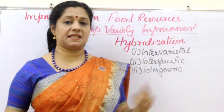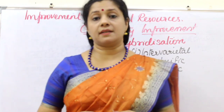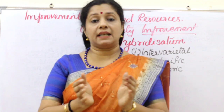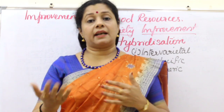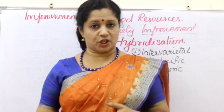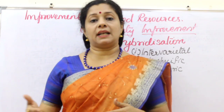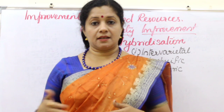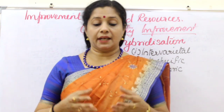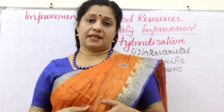The second type is inter-specific, meaning a cross between two different species. A species is a group of organisms that are very closely related and similar to each other, and they can reproduce among themselves. For example, human beings are a species, lion is a species, and tiger is a species. So if you take two different species and cross them, that is called inter-specific hybridization.